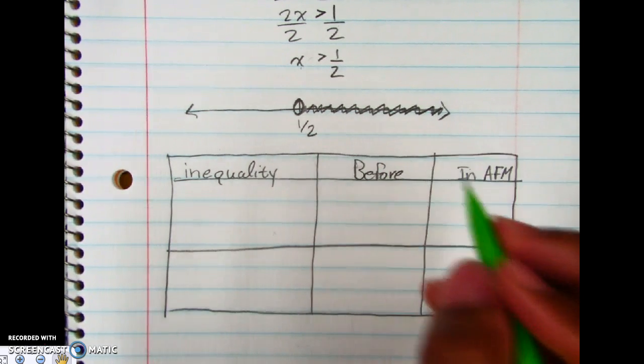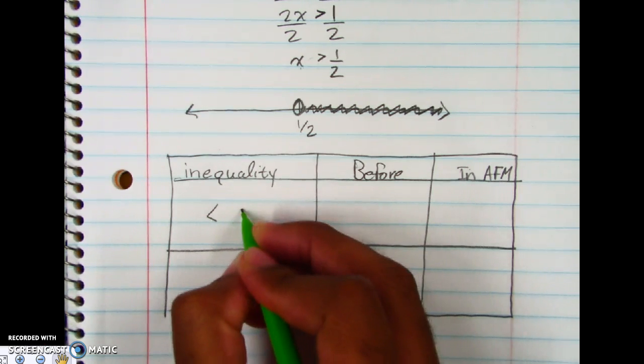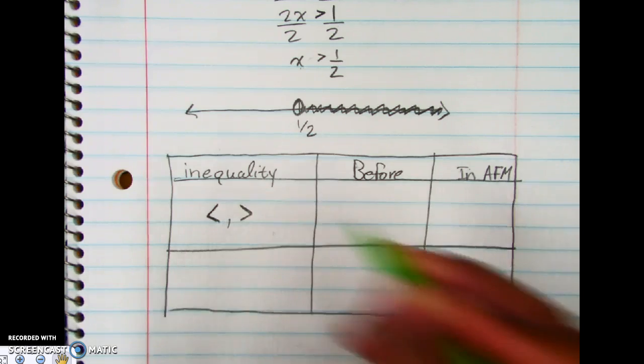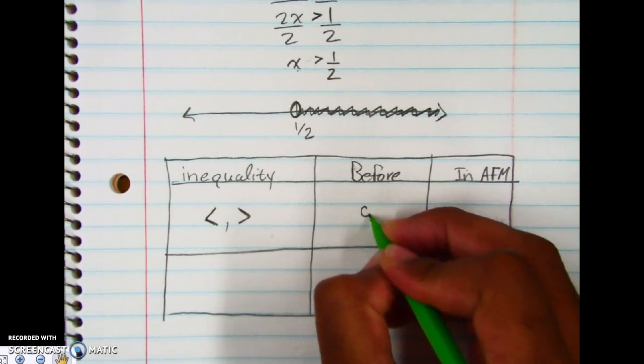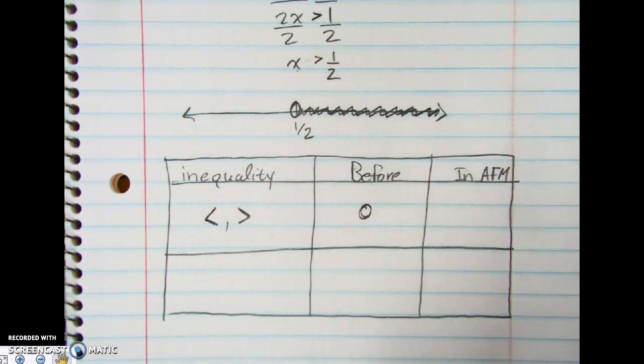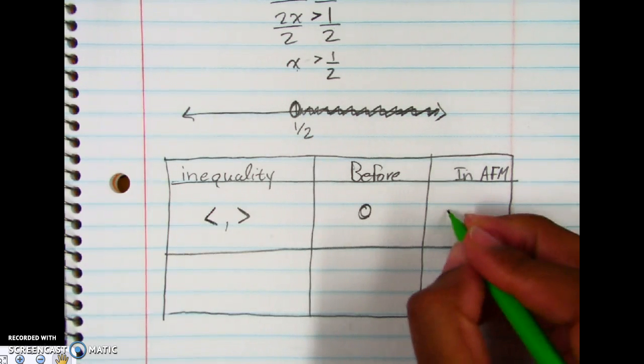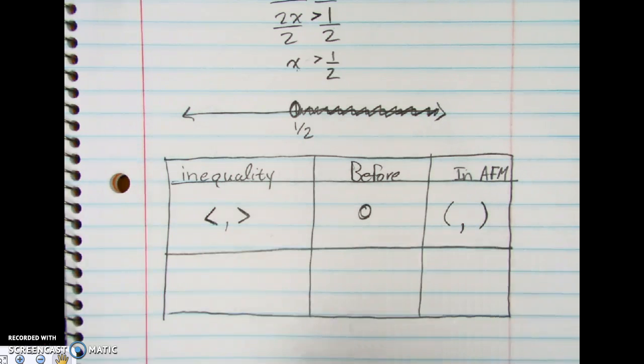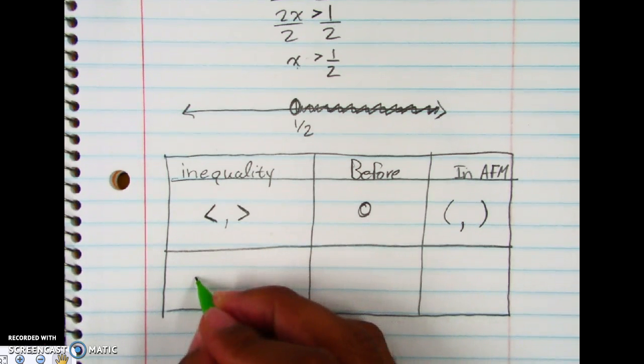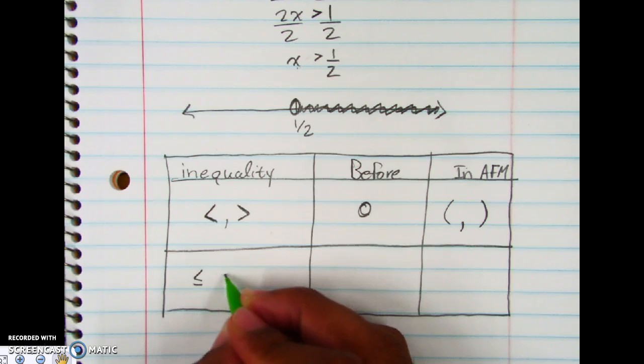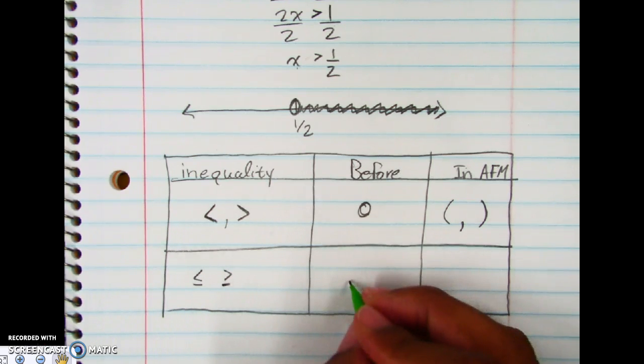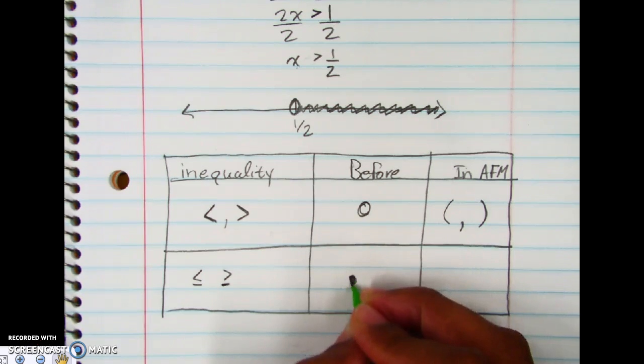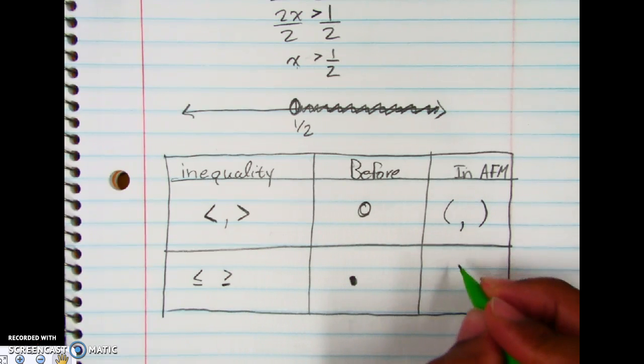So before, with our inequalities, we had less than or greater than sign. And before, we used to use an open circle. Now in advanced functions, we're going to use a thing called parentheses. And when it comes to your greater than, less than or equal to, or greater than or equal to signs, they used to be closed circles. But in advanced functions, we use brackets.